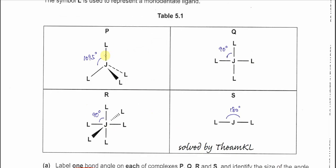For P it's tetrahedral so it's 109.5 degrees. For complex Q, obviously this is square planar so all the bond angles are 90 degrees. For complex R, this is octahedral, all bond angles are 90 degrees.